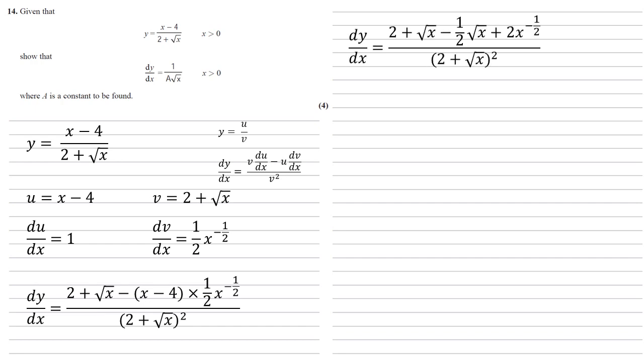Multiplying out the brackets, we've got the 2 plus root x at the beginning there, we've now got minus a half root x from the x times a half x to the minus a half, plus 2x to the minus a half, still over 2 plus root x all squared. Bringing those root x's together, we've got 2 plus a half root x plus 2x to the minus a half, still over 2 plus root x all squared.